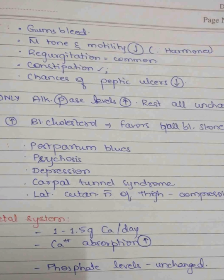In the gastrointestinal system, gum bleeding becomes more common. Muscle tone and motility decrease, prolonging digestion time due to hormonal secretions. Regurgitation and constipation become common, while chances of peptic ulcer decrease. Only alkaline phosphatase levels increase; others remain unchanged. Increased blood cholesterol favors gallbladder stone formation, and due to increased progesterone, atonicity of the gallbladder also occurs.